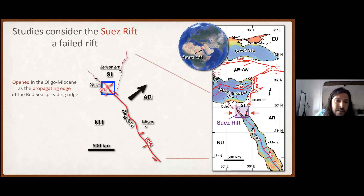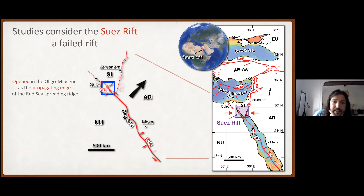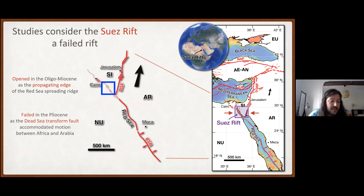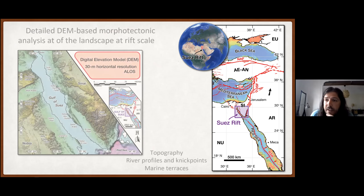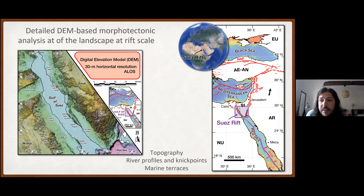So the simplest of context, to orient ourselves: the Suez Rift opened in Oligomiocene times as the propagating edge of the Red Sea spreading ridge. And then when the Dead Sea fault initiated activity and assumed the motion between Arabia and Nubia, that is when the rift is set to have failed. Chris was perhaps against this general consensus already and suspected there was some activity — he worked on that in his PhD and saw many seismics, some of which seemed to indicate that activity continued today.